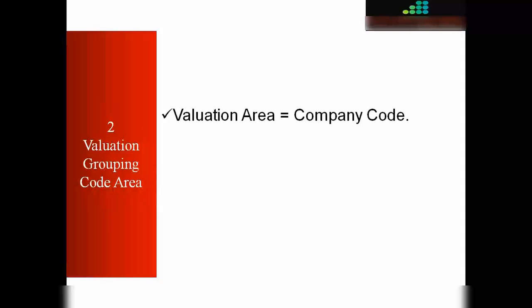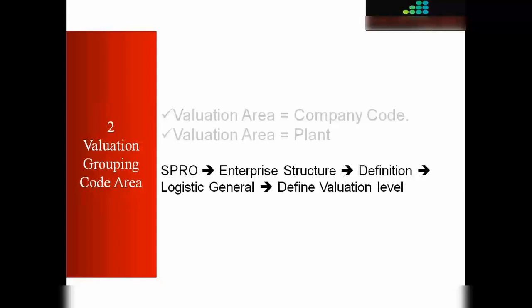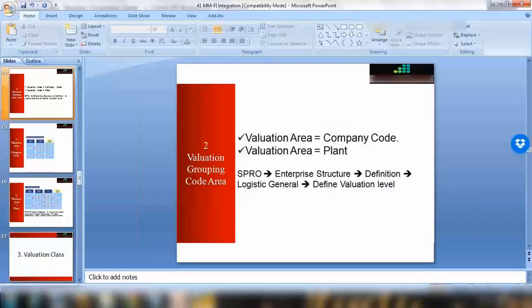The second point is the valuation grouping code. The valuation grouping code relates to how you can do the valuation of your materials — either at the company code level or at the plant level. From a finance perspective, the company can choose to do valuation at the company code level or the plant level, and we need to define that in the customizing.